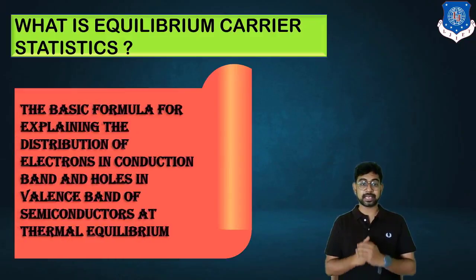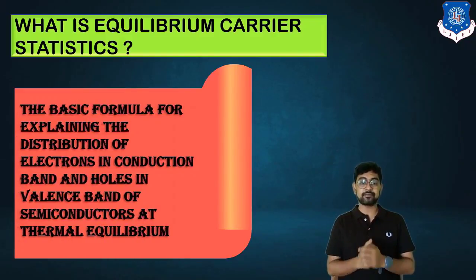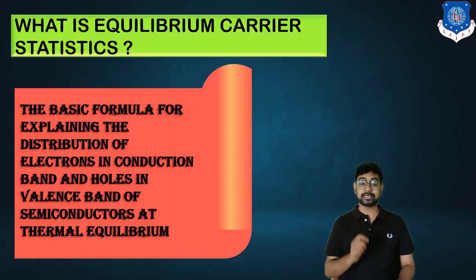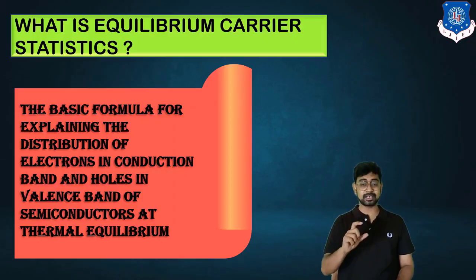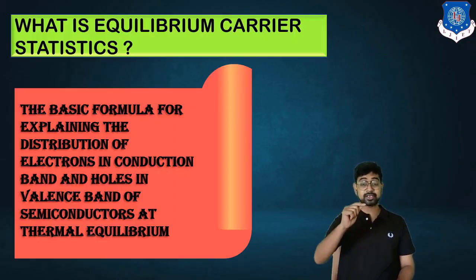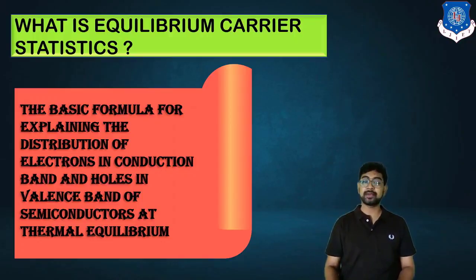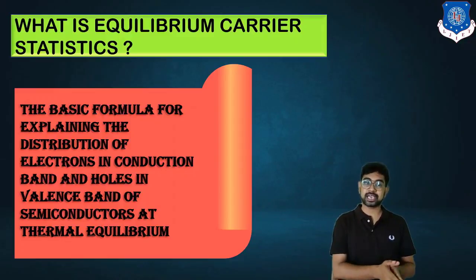What is equilibrium carrier statistics? It is the basic formula for explaining the distribution of electrons in the conduction band and similarly holes in the valence band of a semiconductor at thermal equilibrium. Because of that thermal state, whatever change is done with respect to the valence band — holes in valence and electrons in conduction band — that basic formula is what we study regarding carrier statistics.